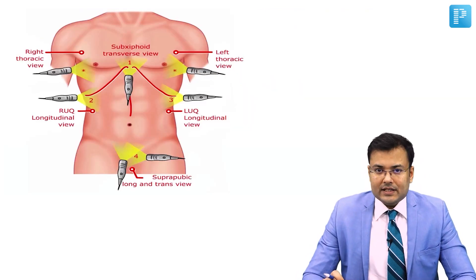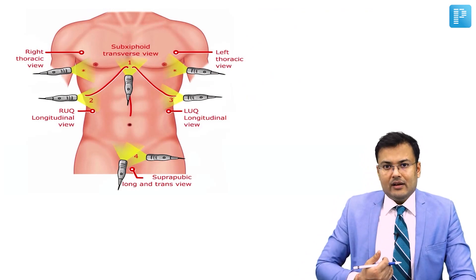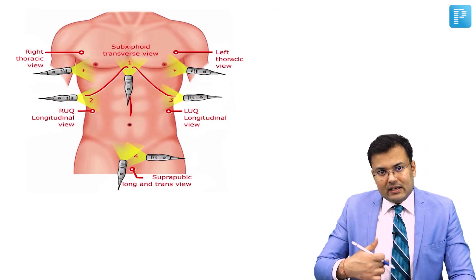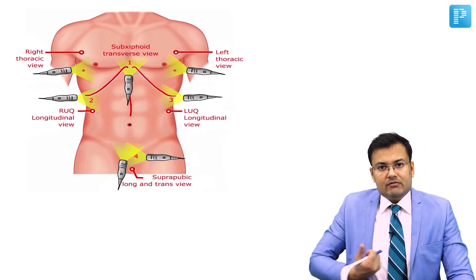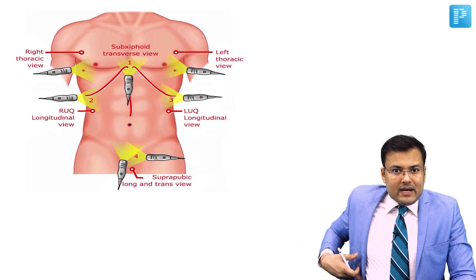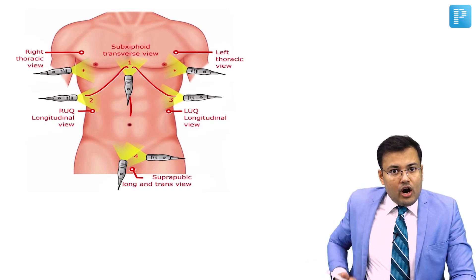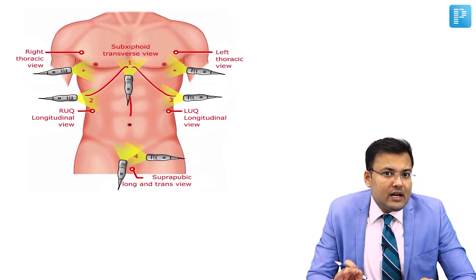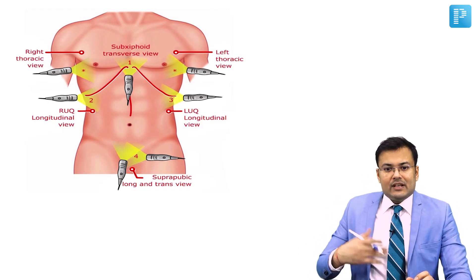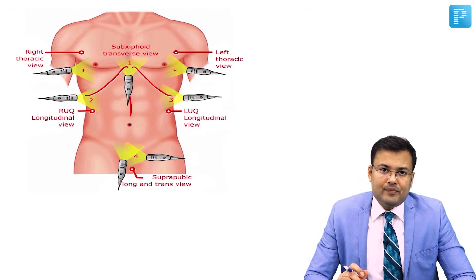For the pericardial sac, the subxiphoid transverse view is used. For the perihepatic region, it's the right upper quadrant longitudinal view. For the spleen, it's the left upper quadrant longitudinal view. For the pelvis, the suprapubic transverse and longitudinal views are used.